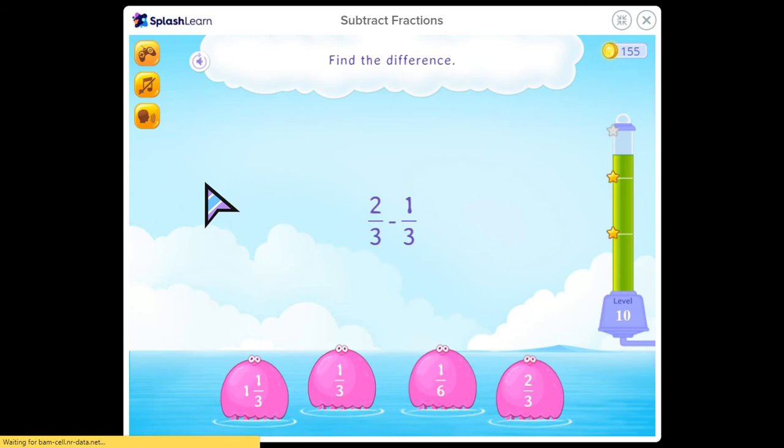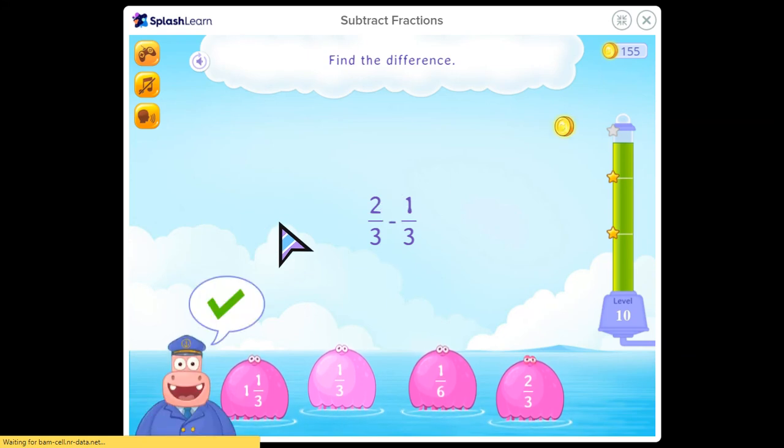Find the difference. But for subtracting and adding, never changes. 2 minus 1 is 1. So the answer is 1 third, because the denominator is the same.